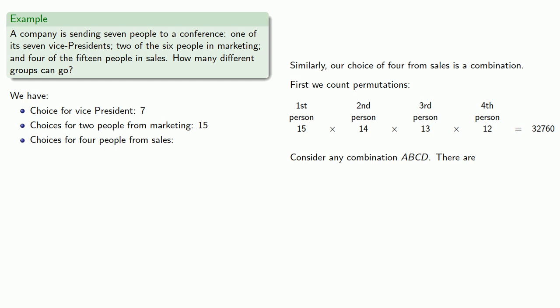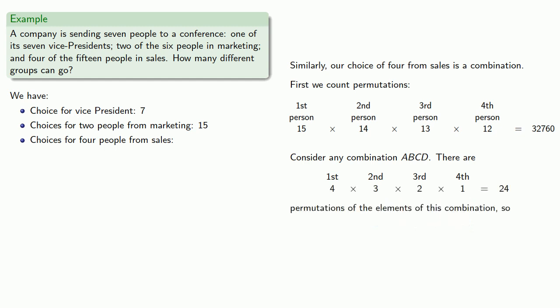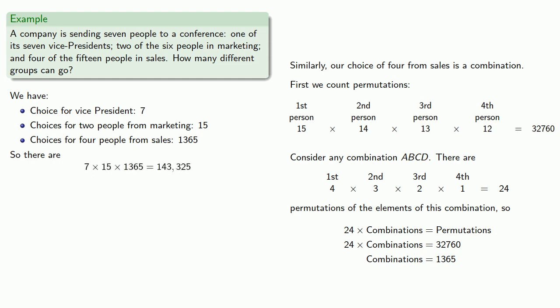Consider any combination a, b, c, d of these four people. In order to get this group of four, we have to have chosen one of them first, another one second, another one third, and another one fourth, and there are 24 permutations of the elements of this combination. So 24 times the number of combinations gives us the number of permutations, meaning the number of combinations is 1,365. So there are 7 times 15 times 1,365 ways to choose seven people from this group.